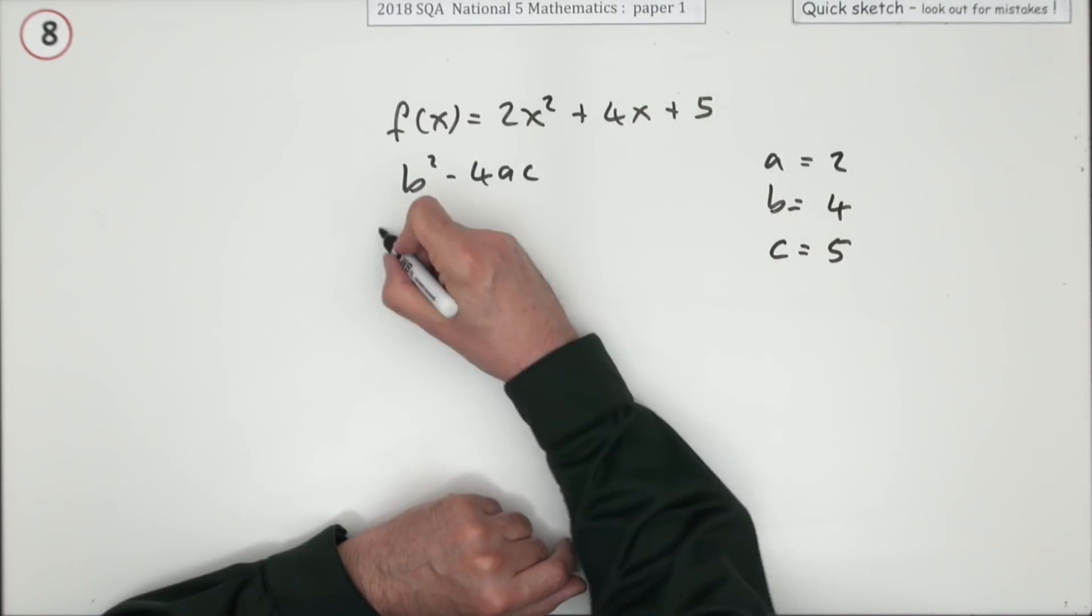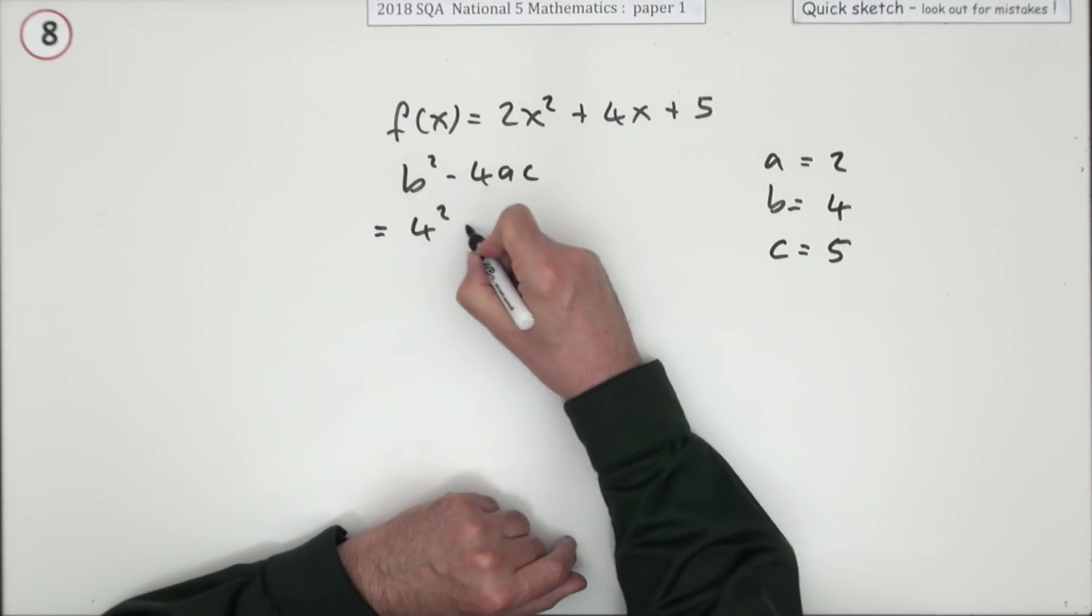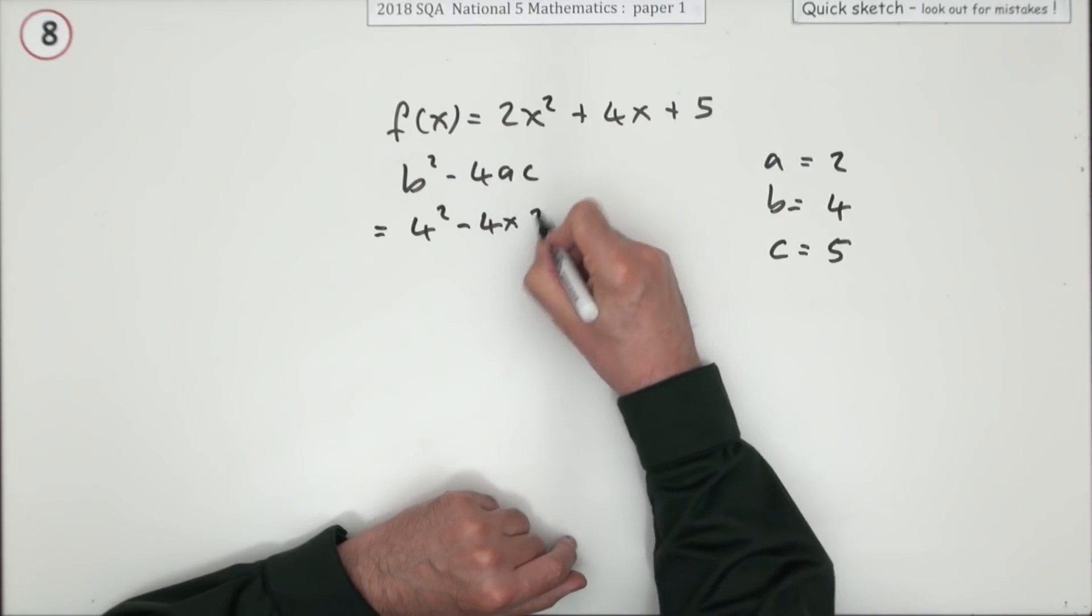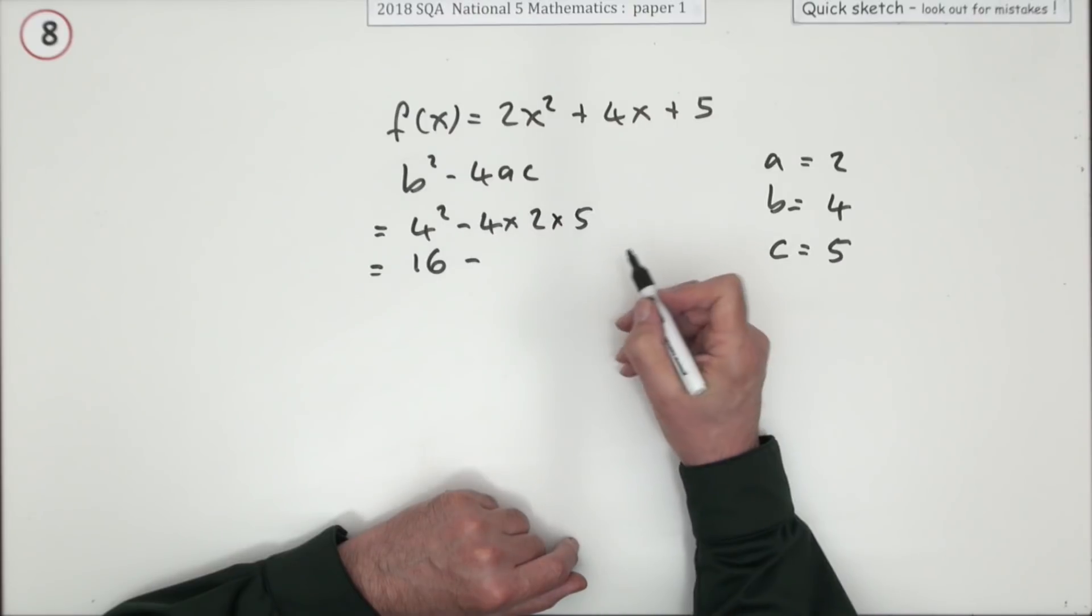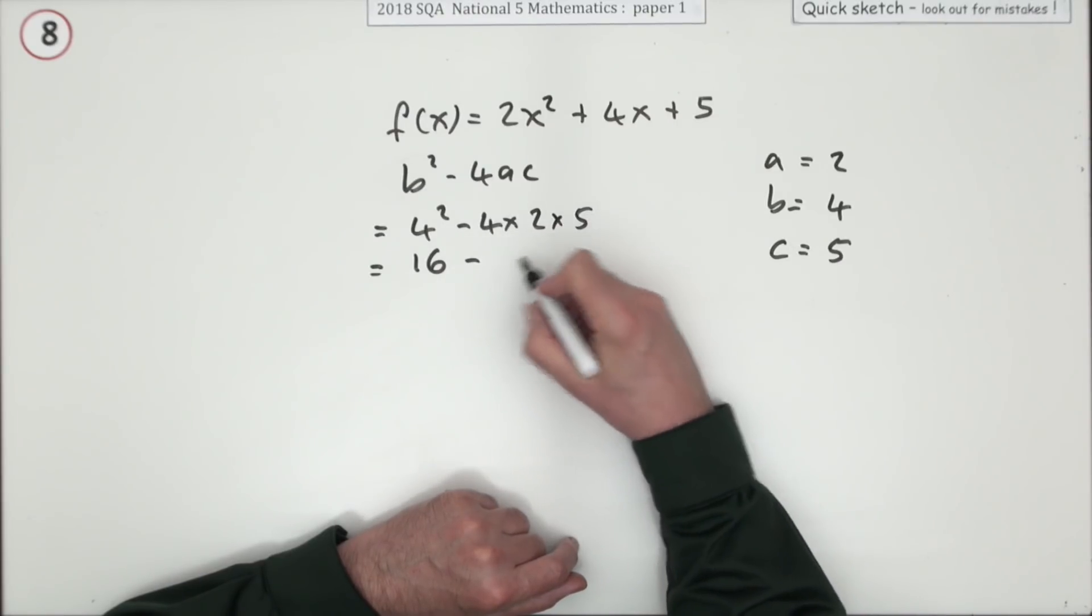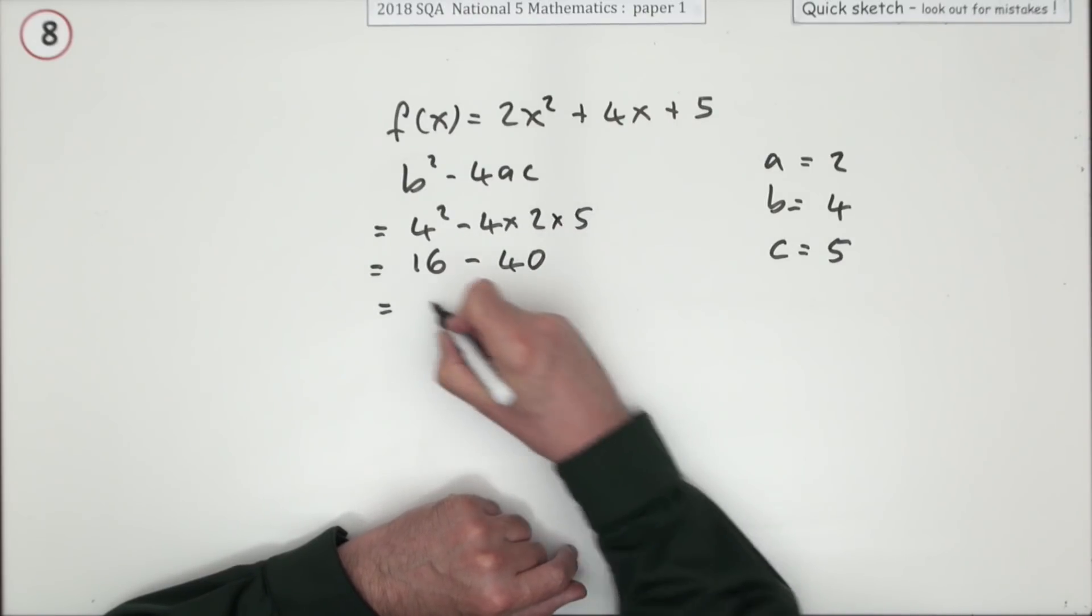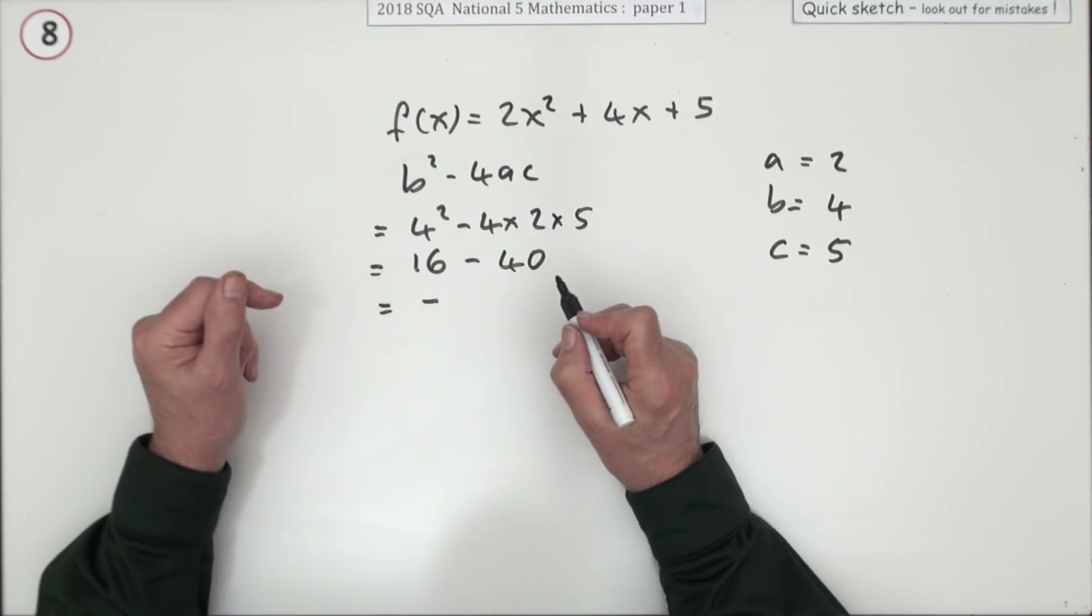So you just put it into that, so that would equal 4 squared minus 4 times 2 times 5. But 4 squared is 16. 4 times 2 is 8, times 5 is 40. So that's negative.